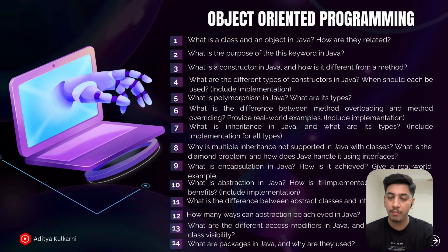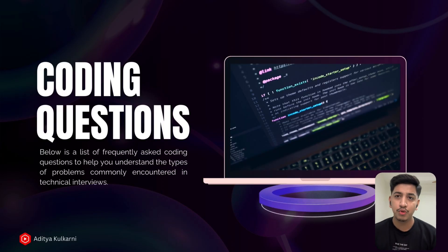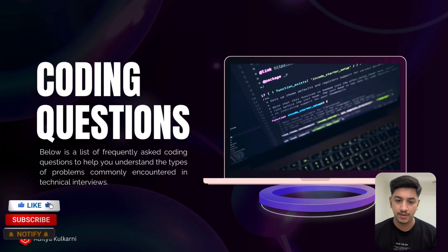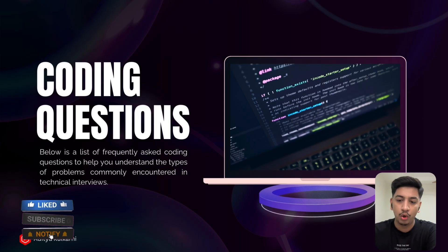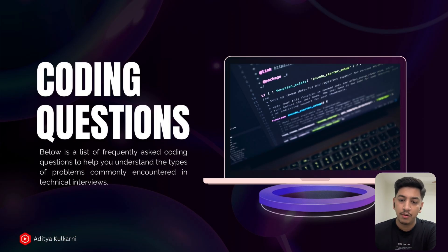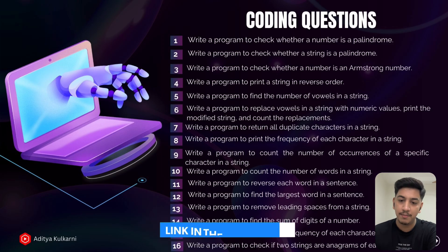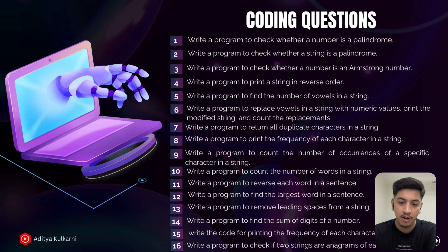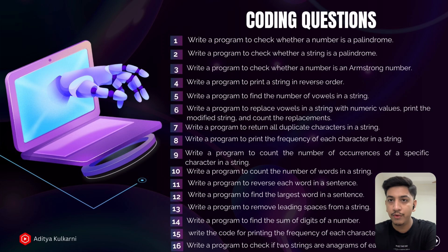Now the most important part: coding questions. Cognizant definitely checks your logic and problem-solving abilities. In this PDF I have added questions from different categories like arrays, strings, loops, patterns, and logic-based problems. Some examples include reversing a number, checking if a string is a palindrome, finding the largest element in an array, and other fundamental coding tasks — perfect to test whether you are actually interview ready.